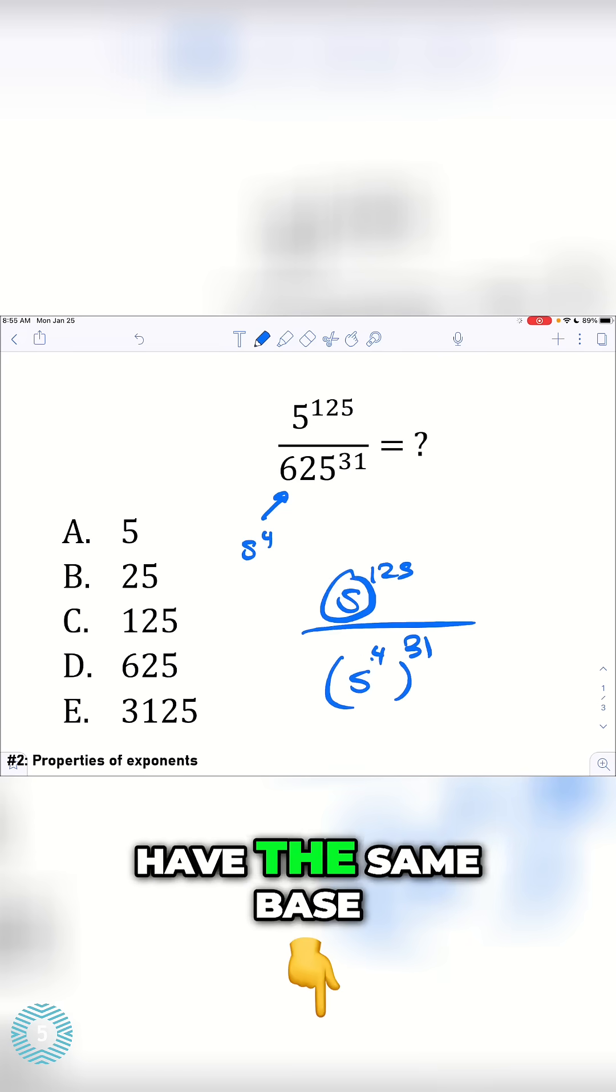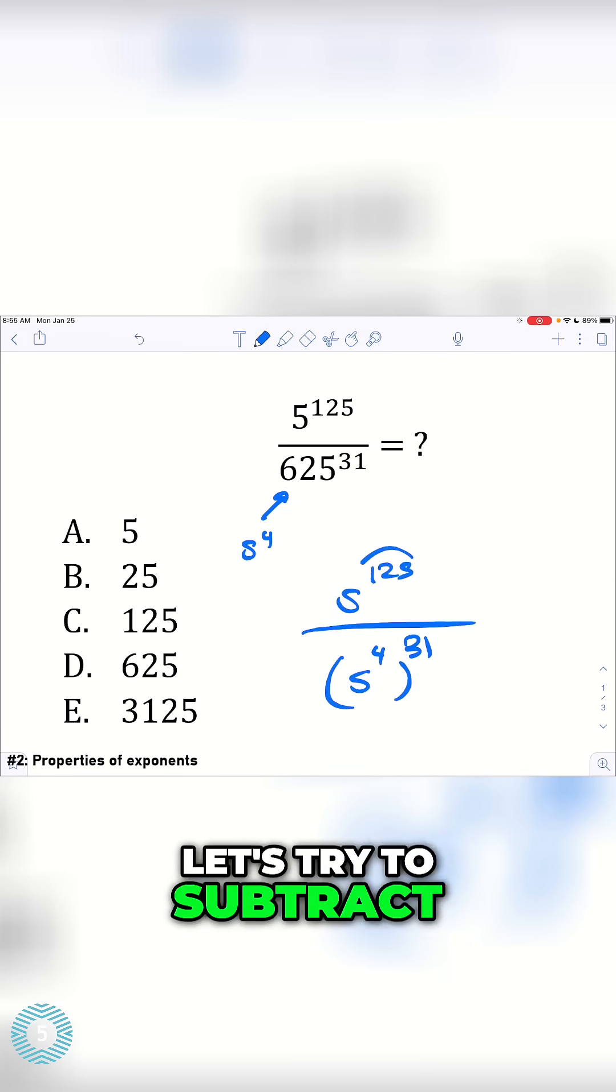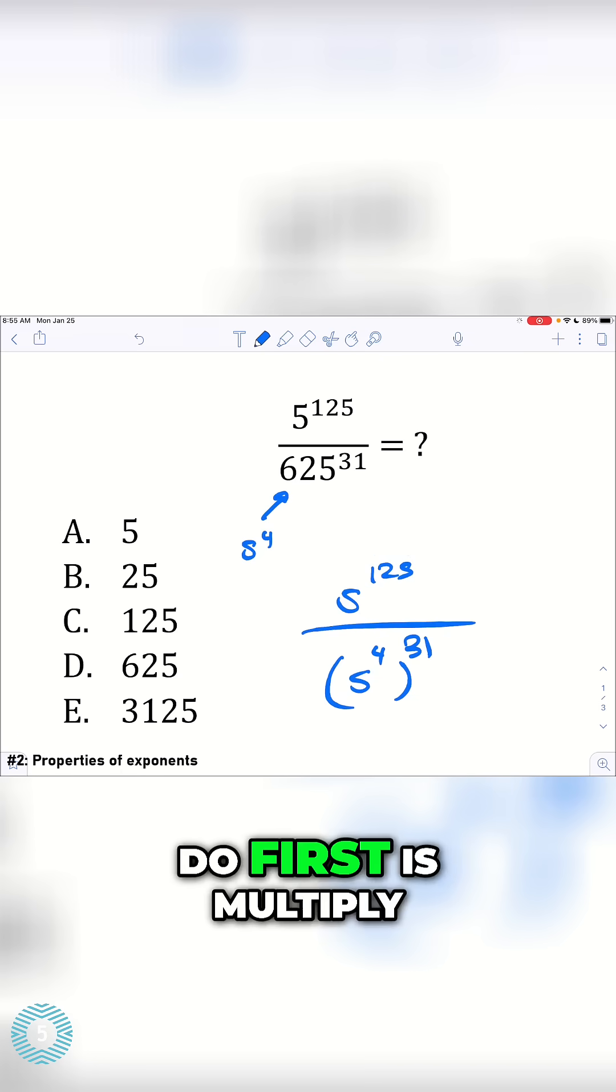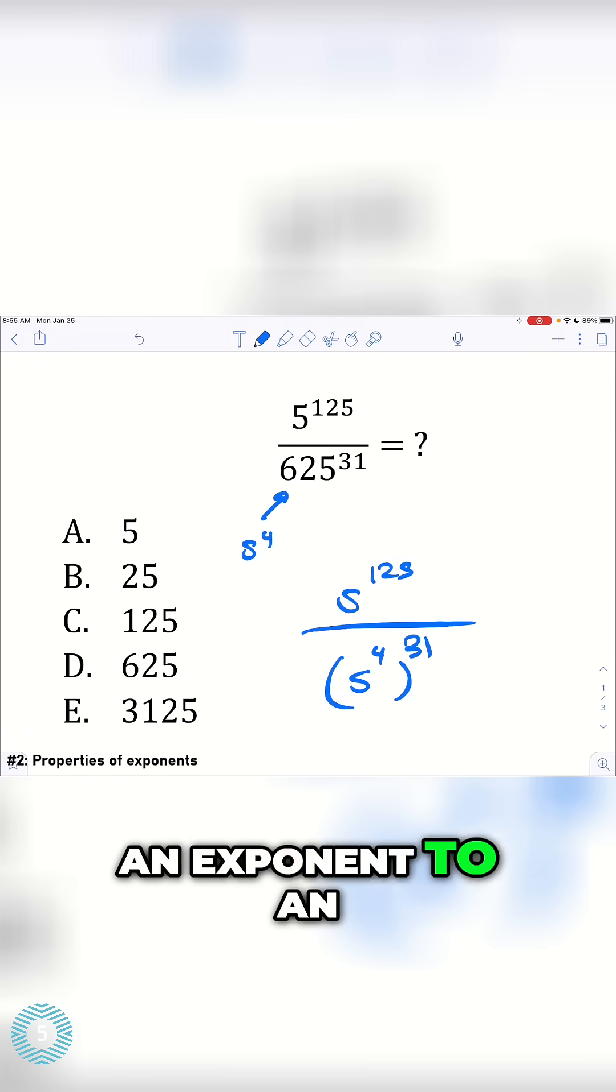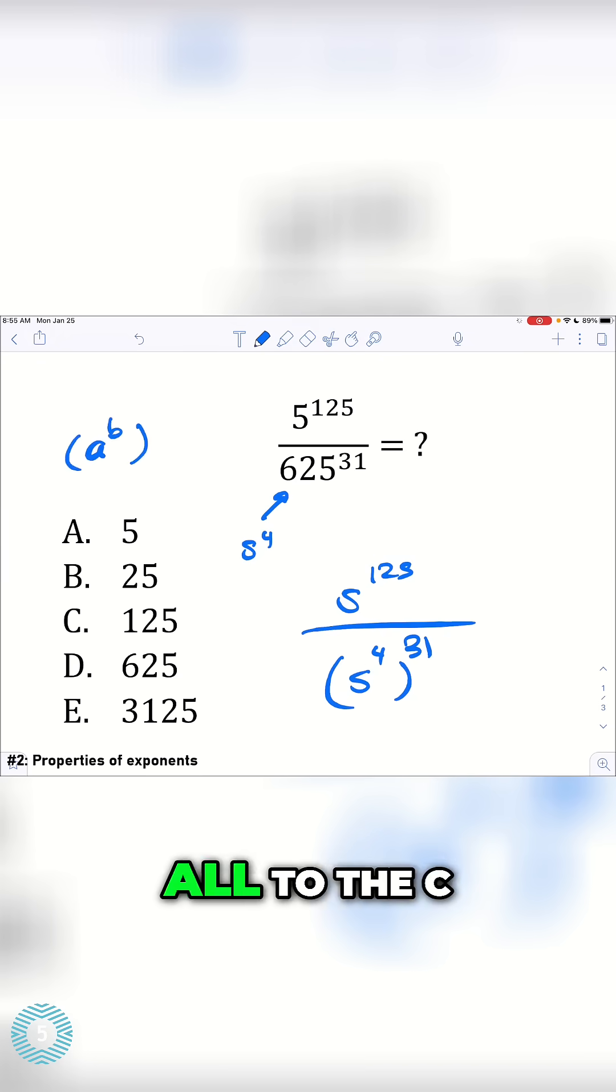How can you simplify this? We notice that we have the same base of 5. Let's try to subtract our exponents. But what we can do first is multiply these two exponents together, because if you have an exponent to an exponent like a to the b all to the c, this just turns into a to the b times c.